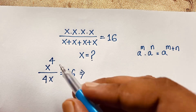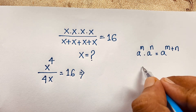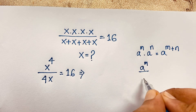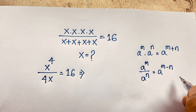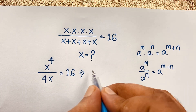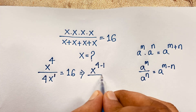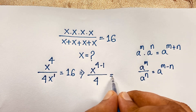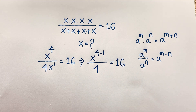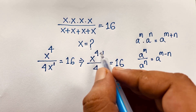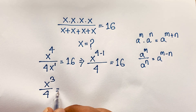Now we have x to the power 4 over x. According to the exponential division formula, a to the power m over a to the power n equals a to the power m minus n. Applying this formula here, it will be x to the power 4 minus 1, which is x to the power 3, over 4 is equal to 16. This is easy maths, solving step by step.